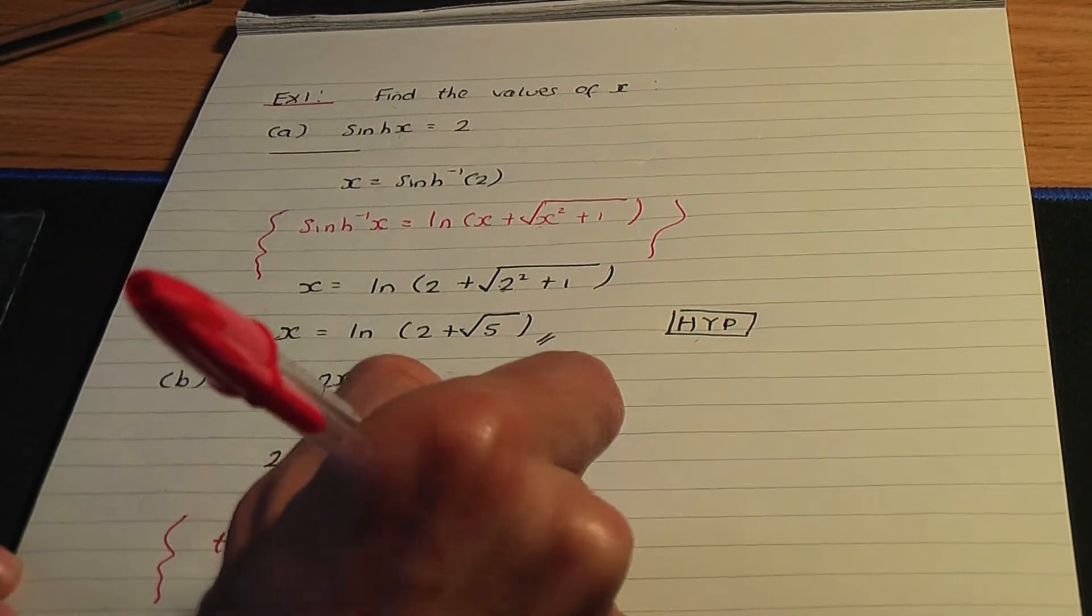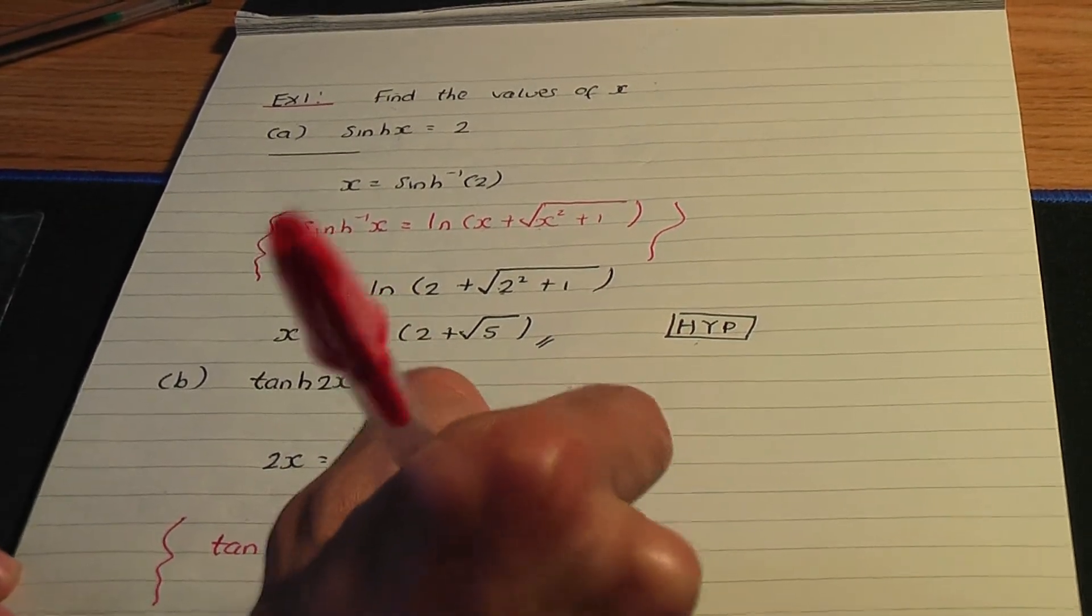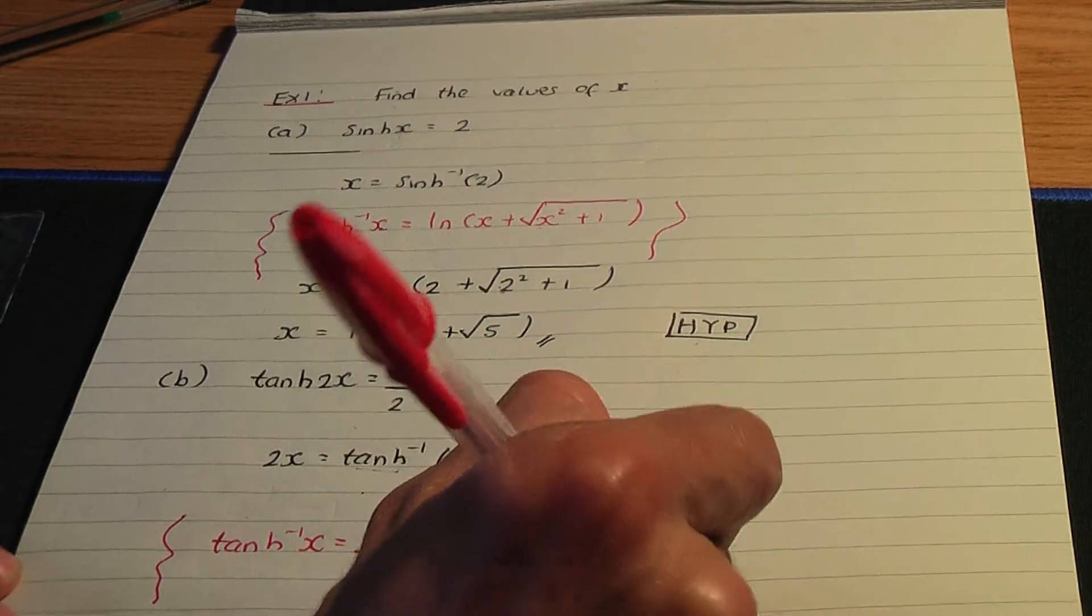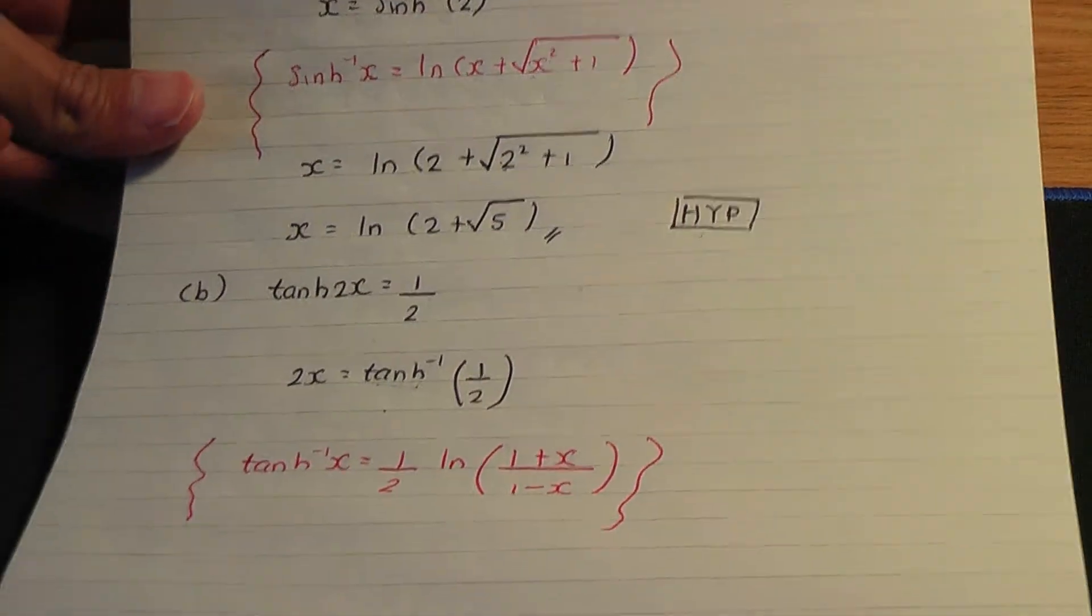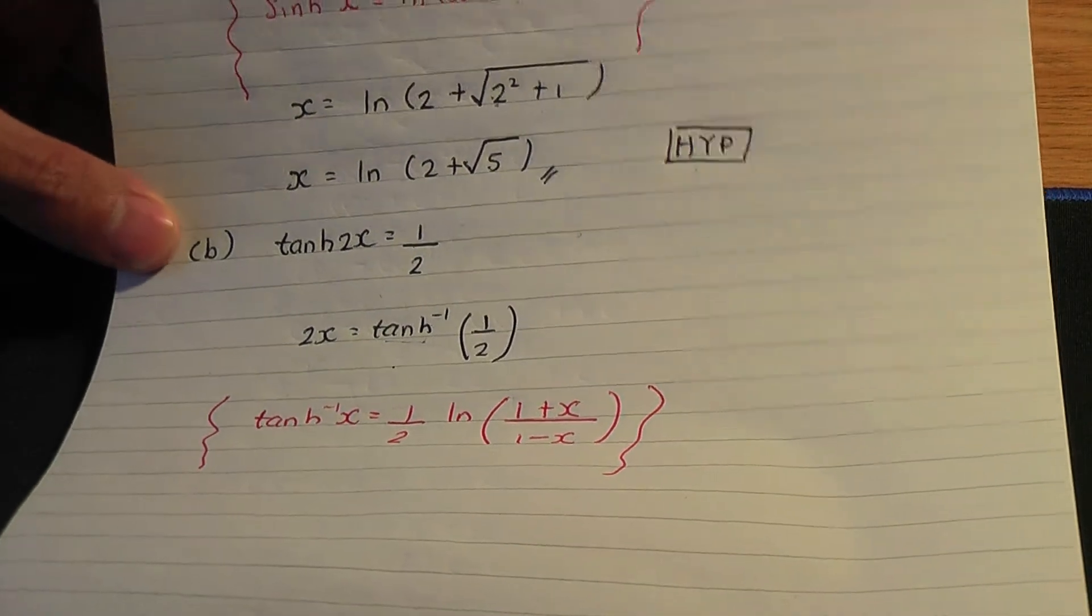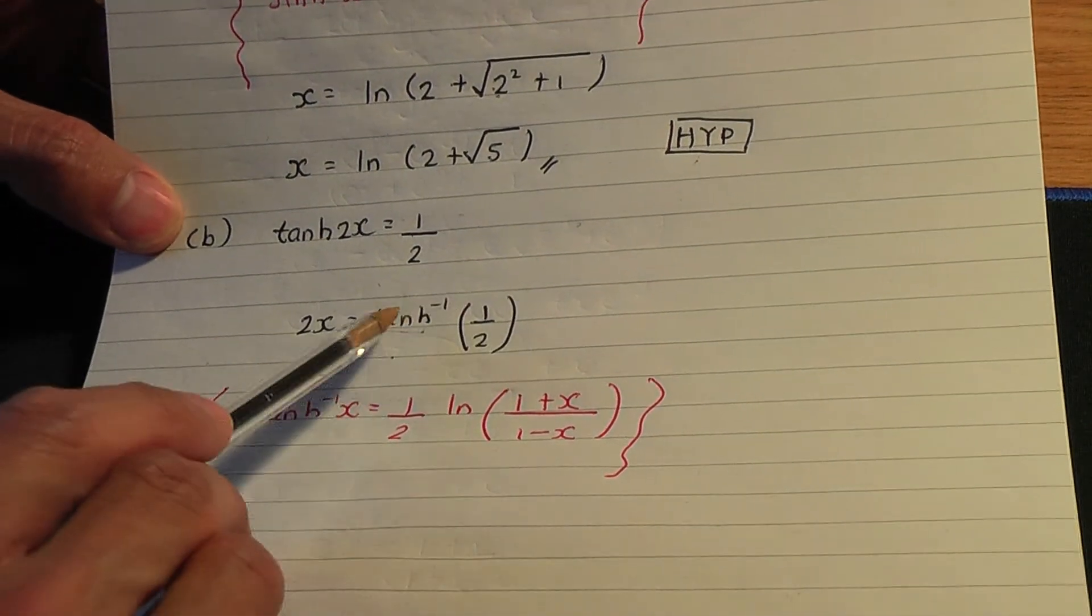Inverse hyperbolic tan x had the definition 1 over 2 ln, 1 plus x over 1 minus x. That's the definition we've seen and proved.